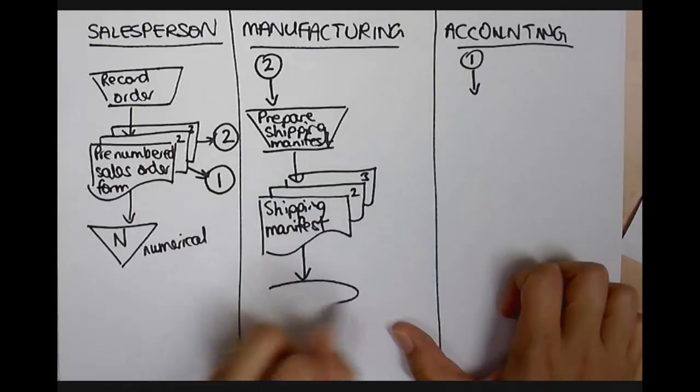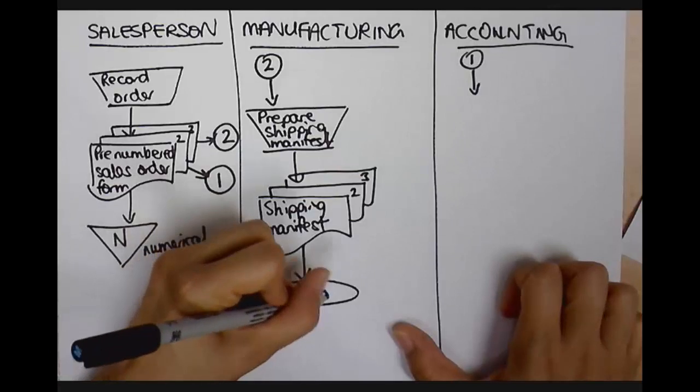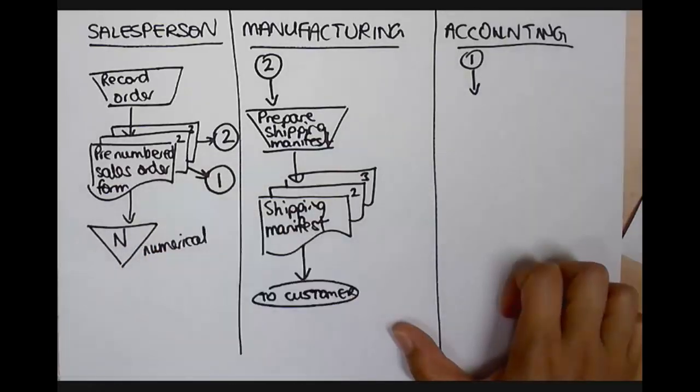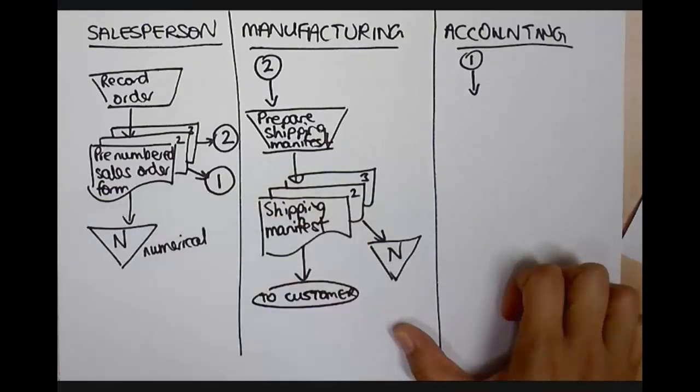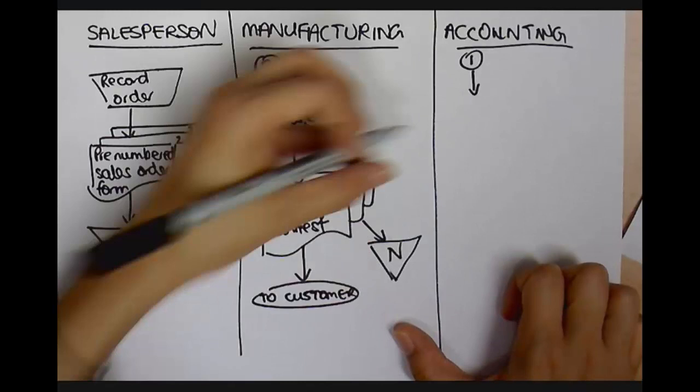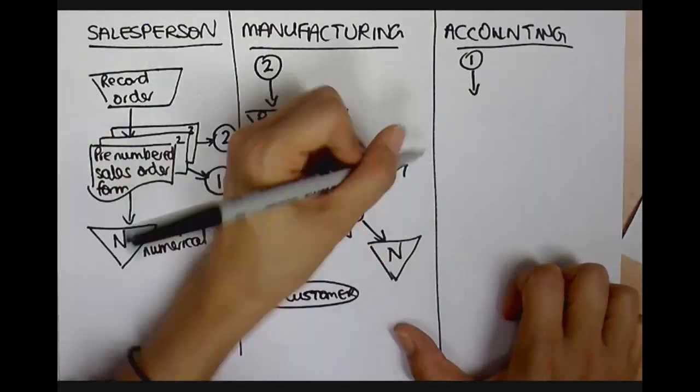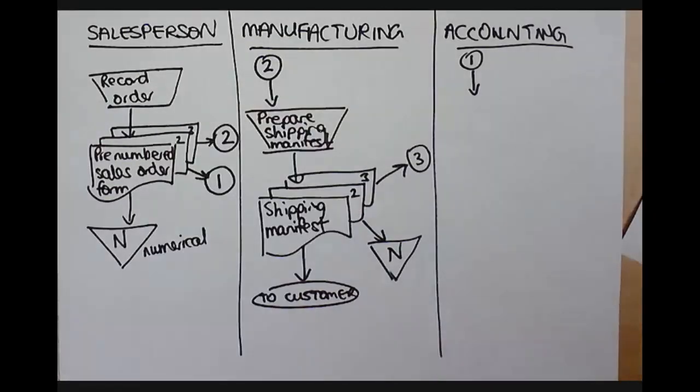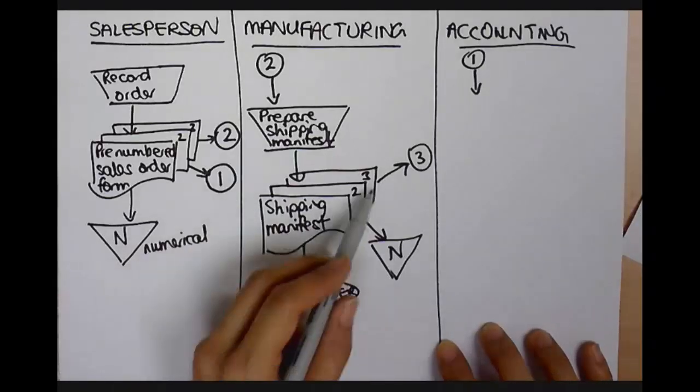Alright, one copy goes to the customer. Alright, so anything that goes external, I use this little ellipse here. To the customer. Alright, and then one copy is filed numerically with the manufacturing department. Okay. Okay. A second copy goes to the accounting department. Alright. I've already used connectors one and two. Connect to number three, there. Okay. So, the original goes to the customer. One copy with the manufacturing department, one copy goes to accounting.